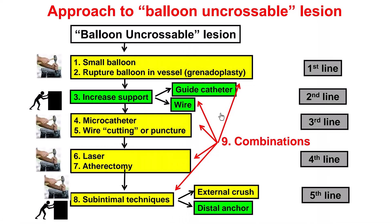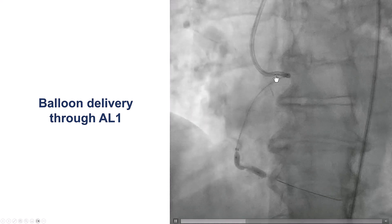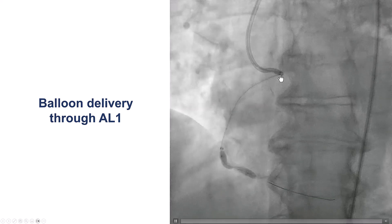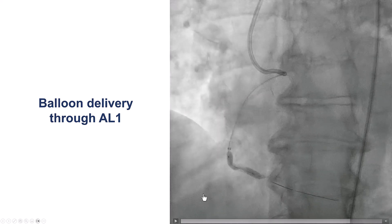So how to deliver equipment to that lesion? We have several steps. One is to use smaller balloons, but here the main issue is guide catheter support. So we decided to switch to femoral access and use again a guide extension — an AL-1 from femoral access with a guide extension advanced essentially all the way down to the distal right coronary artery.